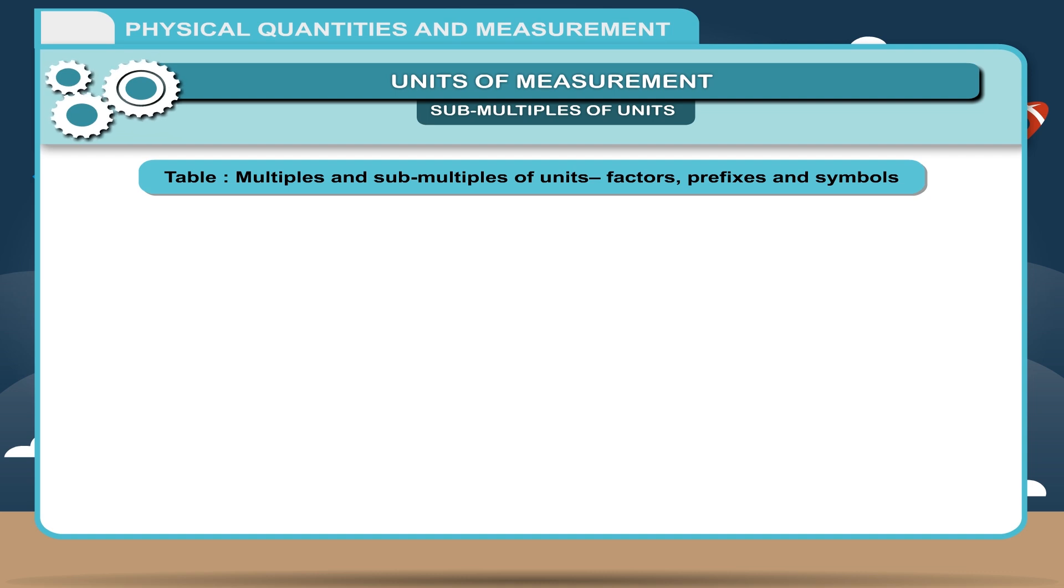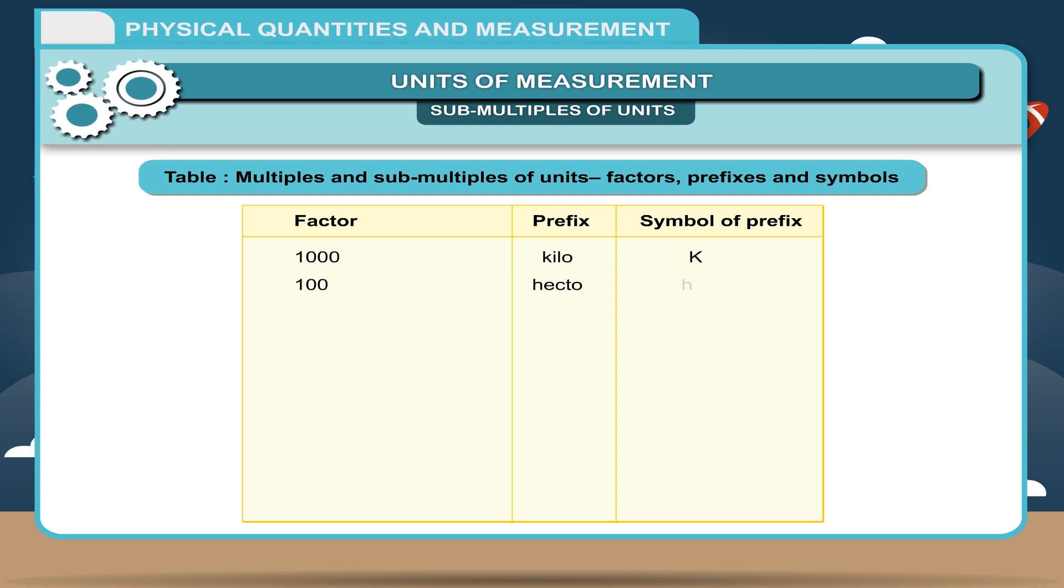Table: Multiples and sub-multiples of units - factors, prefixes and symbols. Factor, Prefix, Symbol: 1000 (kilo, k), 100 (hekta, h), 10 (Deca, Da), 1 (meter, m), 0.1 or 1 by 10 (Desi, D), 0.01 or 1 by 100 (centi, C), 0.001 or 1 by 1000 (milli, m), 0.000001 or 1 upon 10 lakh (micro, μ).